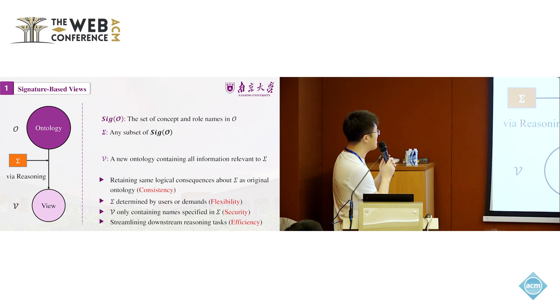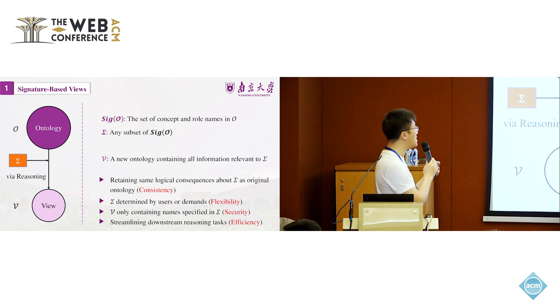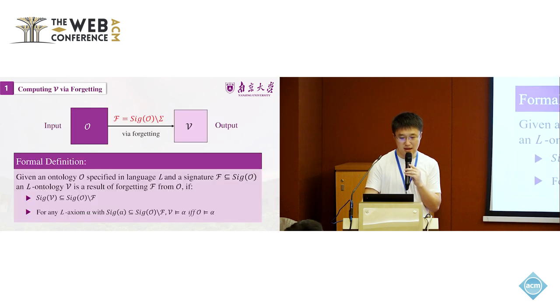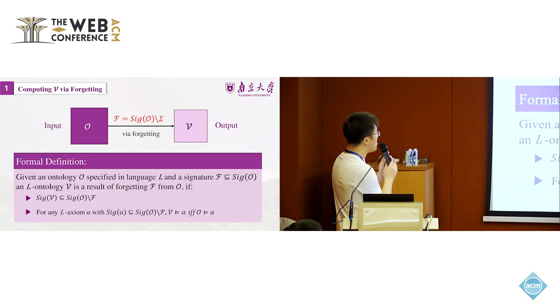To formalize this problem, given a set of concept and role names in the original ontology, and also a subset of this signature. Our aim is to create a new ontology containing all information relevant to this signature sigma via some reasoning procedures. The result we call a view of the original ontology.